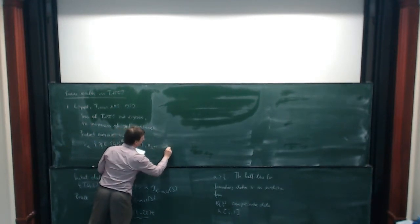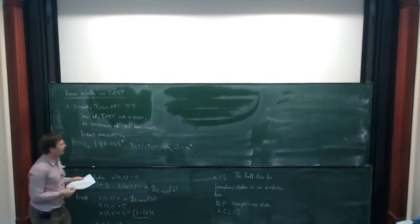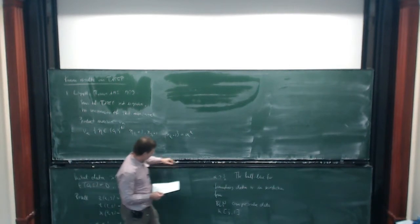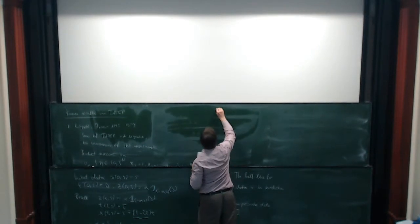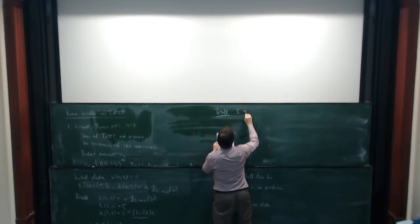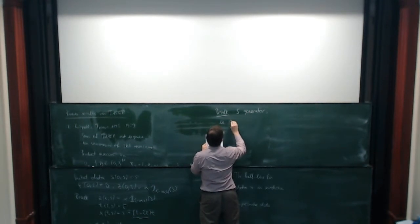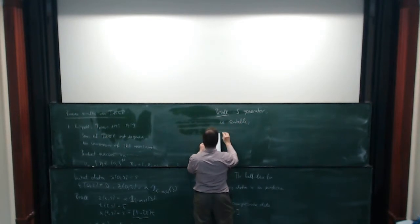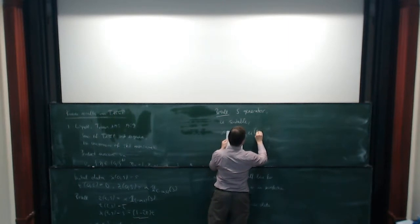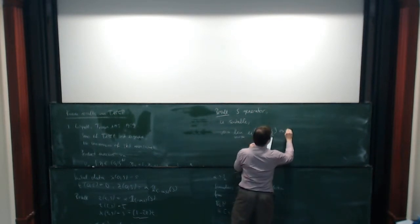There can never be two particles at the same position at the same time. The product measure is defined for all cylinder functions: P(eta_{j1}=1, ..., eta_{jn}=1) equals alpha^n. Liggett's result, which I will need, is as follows: if S is the generator of the process and mu is a suitable density, with rho defined as the limit of mu looking at positions far out, then one can show the following.